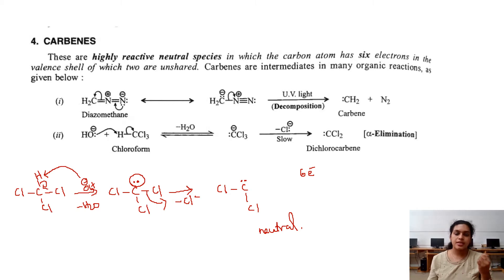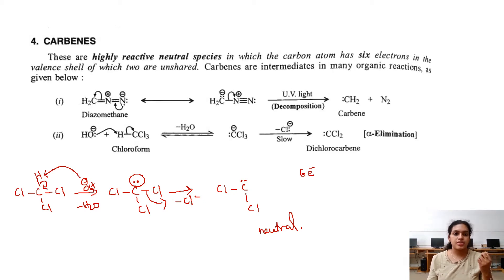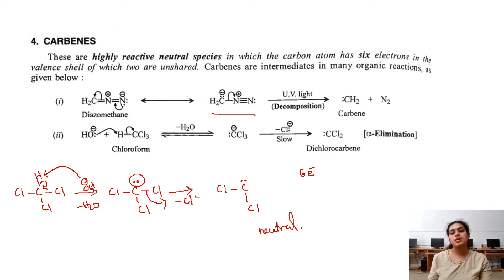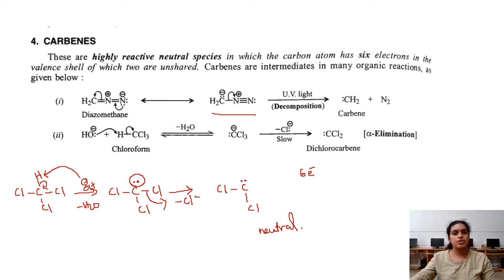This is how dichlorocarbene is formed, and it is the intermediate of the Reimer-Tiemann reaction. Another method of generation is from diazomethane. Diazomethane has 2 resonance structures. In this process, the CH2 carbon atom gains 2 electrons — one from the neighboring nitrogen and one of its own — while also losing one electron to nitrogen. As a result, there is no net gain or loss, no positive or negative charge, and we get a carbon with 2 bonds and 2 electrons.